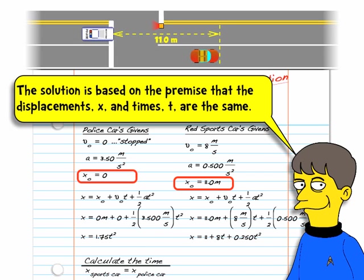The second thing to note here is I have two lists of givens. Our rule is whenever we have an acceleration, we have a list of givens. So I have two objects, that means I have two accelerations, therefore I have two lists of givens that I have to work with.